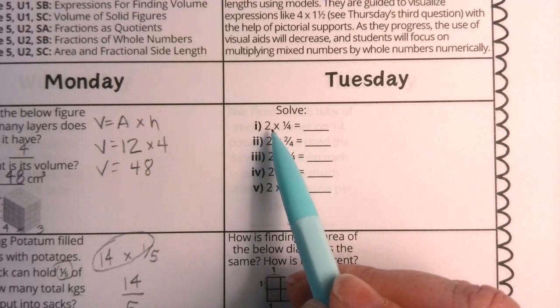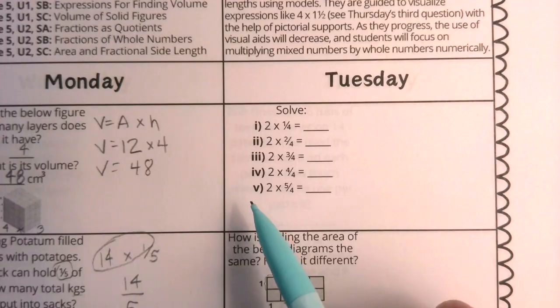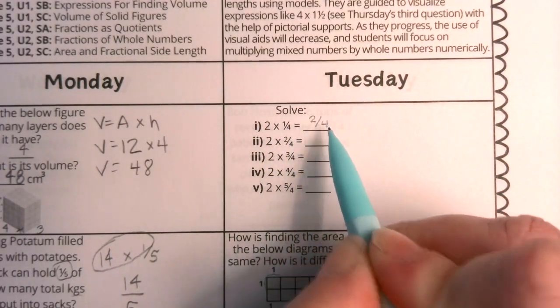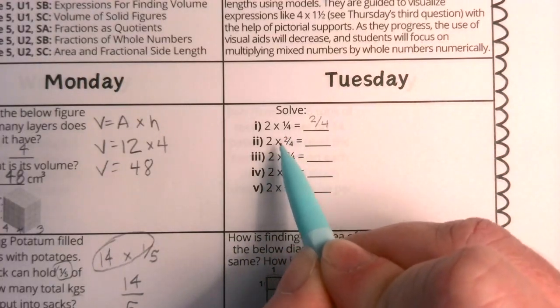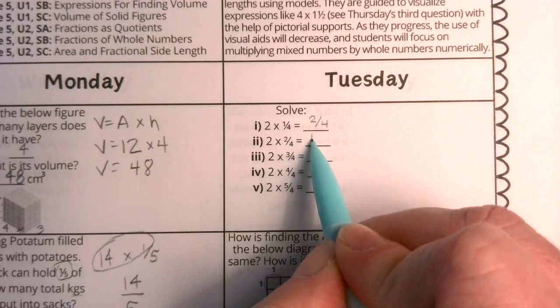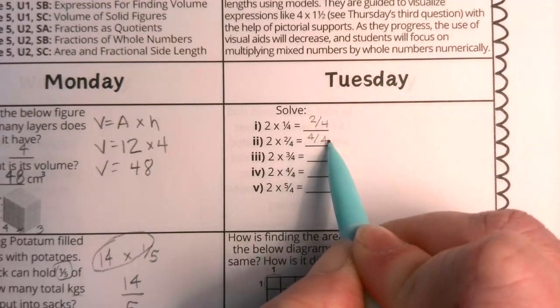We want to know what 2 x 1/4 equals. Well, I know that I can take my two times my one, so I have two fourths here. I'm going to take my two times my two in two times two over four, so I'm going to have four fourths. Here I have two times three over four, so I'm going to take my two times three equals six, and my four stays my denominator.